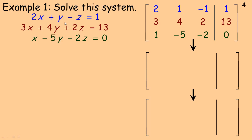So on to a couple of examples. We'll do two of these and then talk about what certain matrix forms look like on the last page. We're asked to solve this system, so we take the coefficients and put them into the augmented matrix. The whole idea is to use those row operations to change the numbers 3, 1, and negative 5 — below the main diagonal — into zeros, and I'll explain why as we get closer to the end.